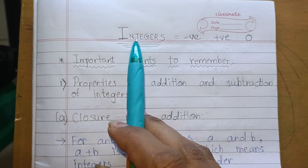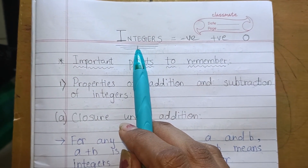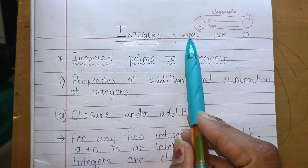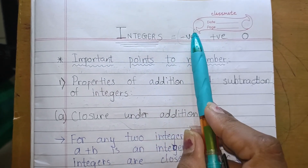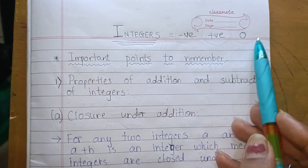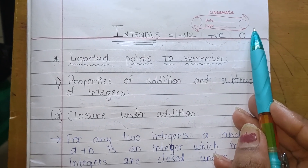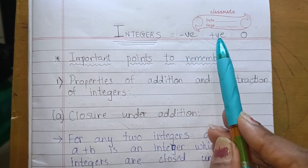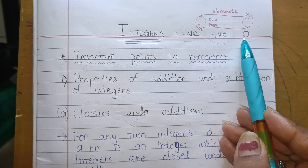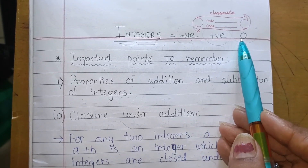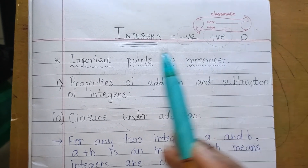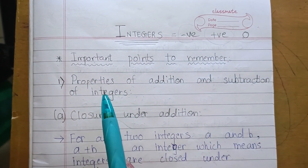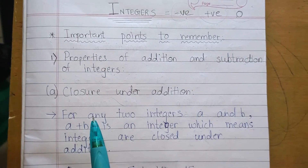So let's start with Chapter Number One: Integers. What are integers? Integers are numbers that are negative, positive, or zero. Integers include numbers which are either negative, positive, or zero. Before starting with the sums, we will first go through important points to remember. Number one: Properties of Addition and Subtraction of Integers.